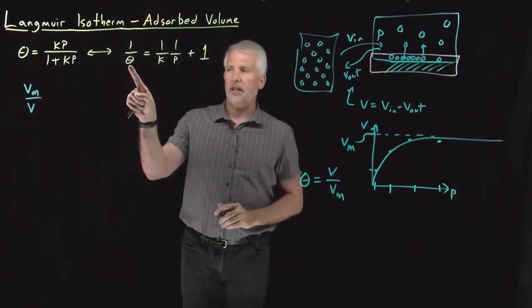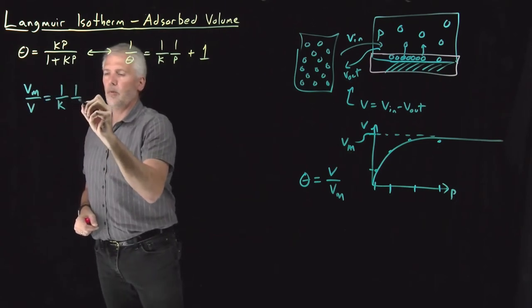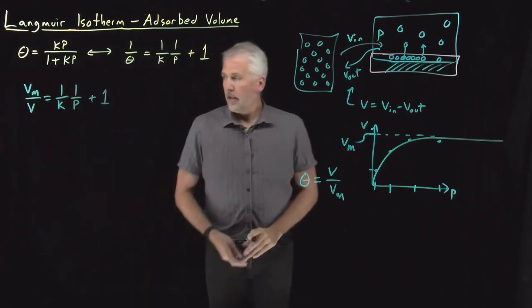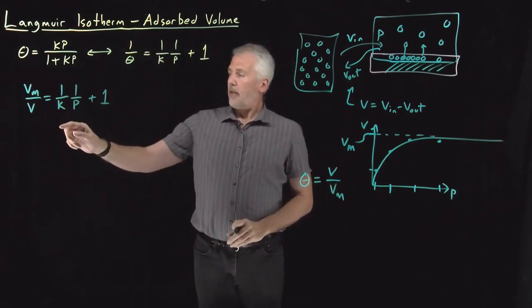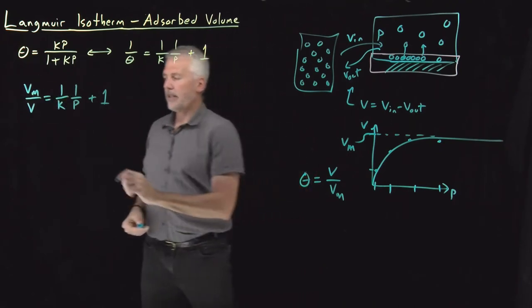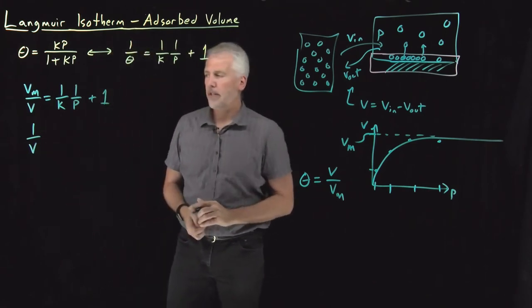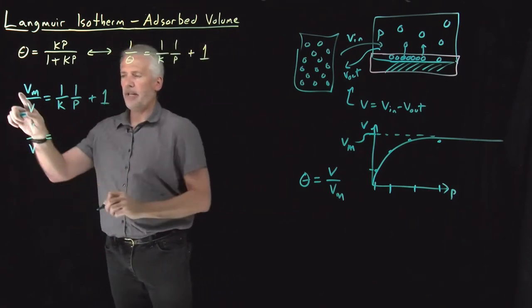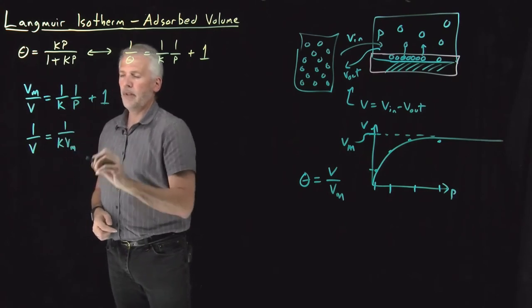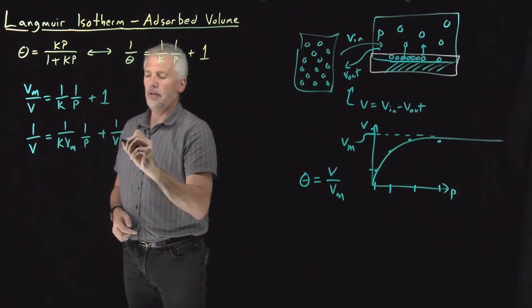On the right side, I've still got one over K, one over P, plus one. If I take the V sub m from the left side over to the right side, so all I've got left on the left is one over V. I'm dividing by Vm on both sides, so I'll write one over K times Vm, one over P, and then the one becomes a one over Vm.